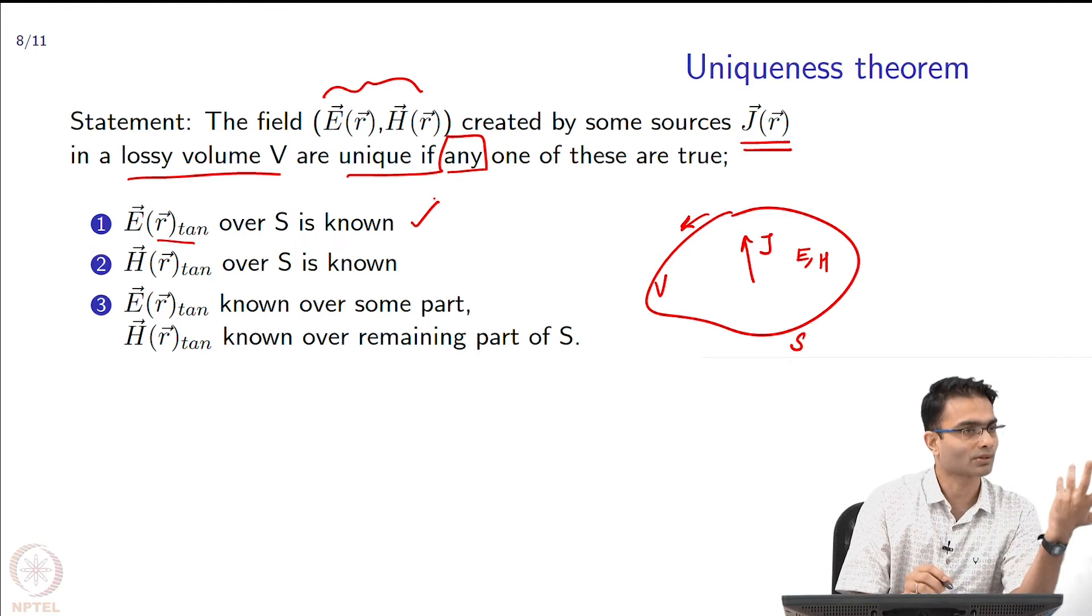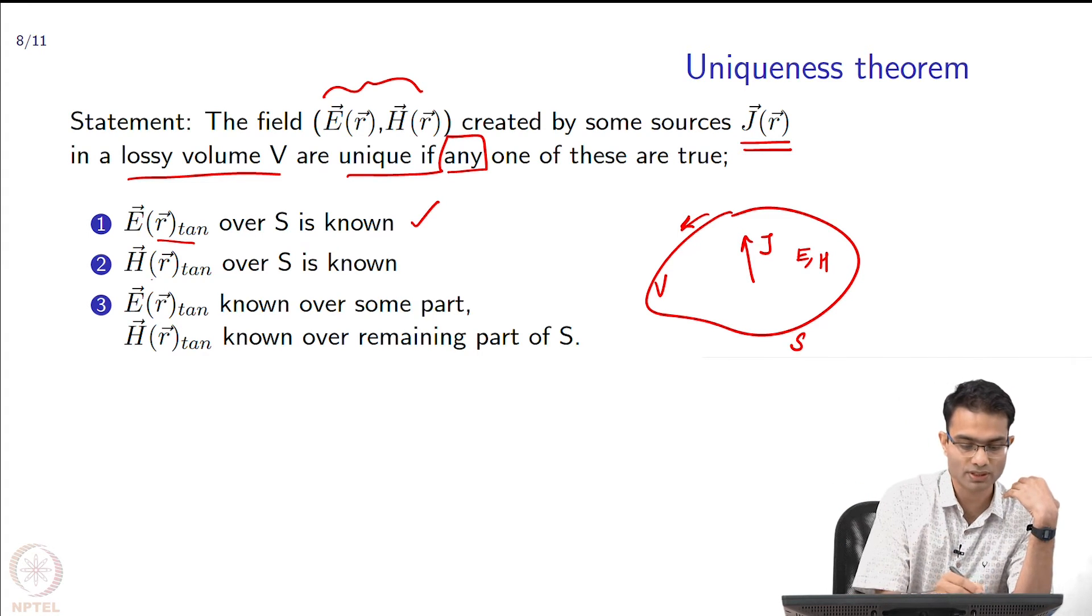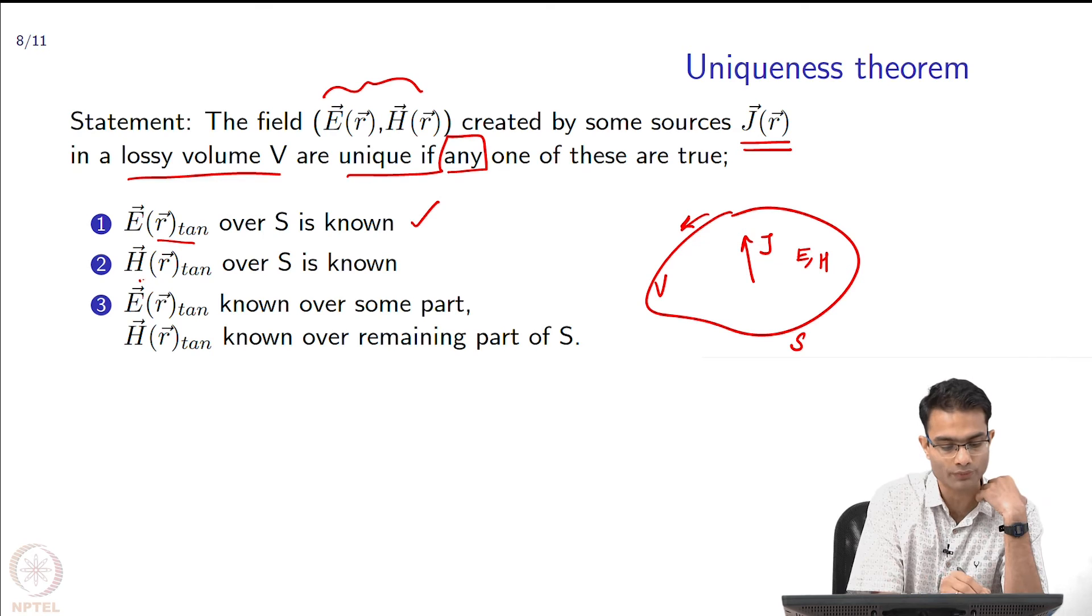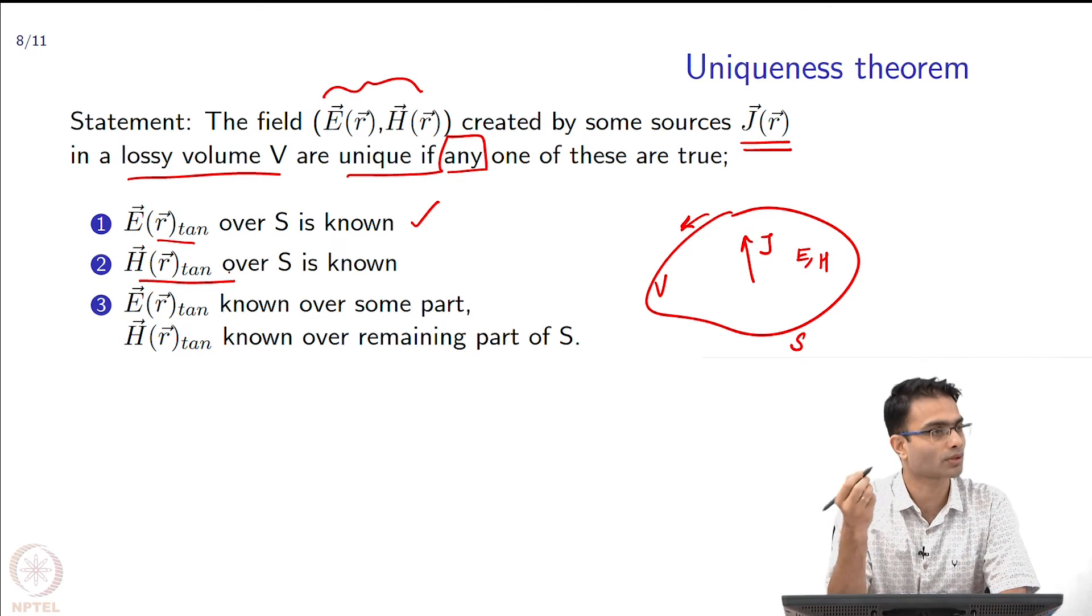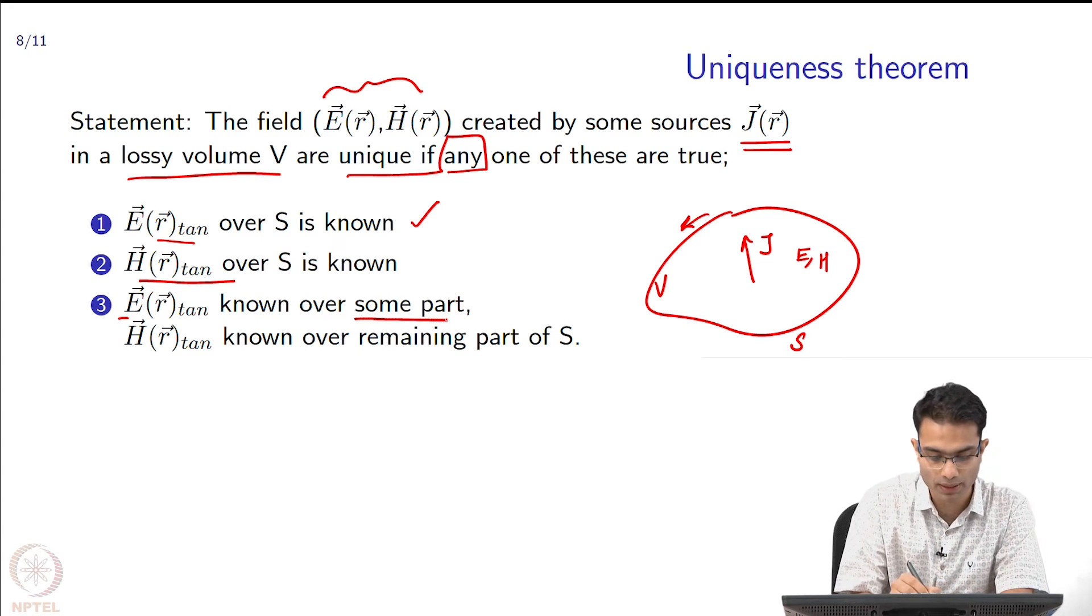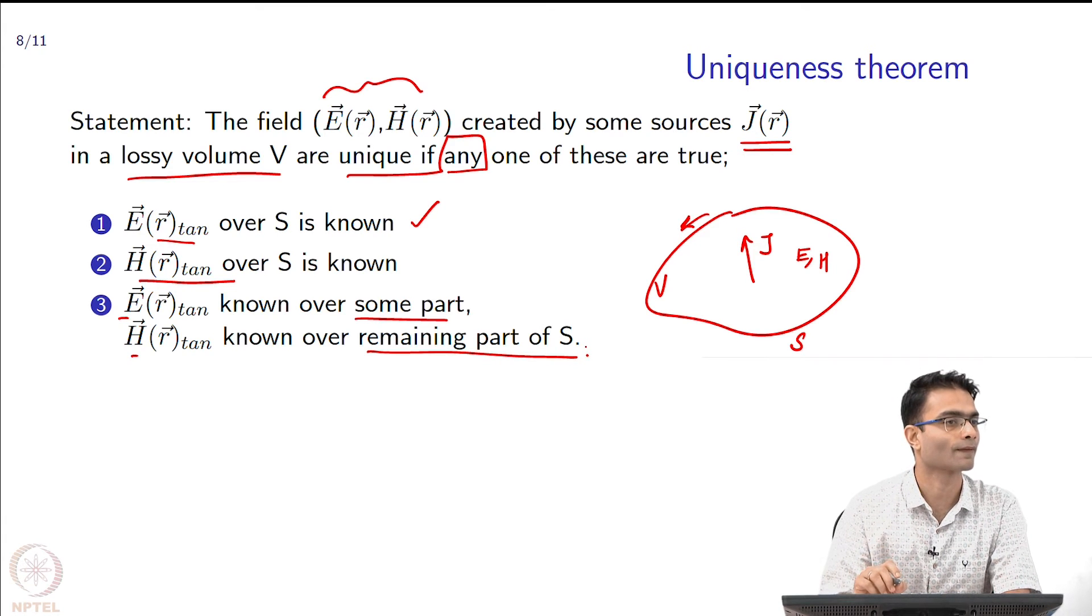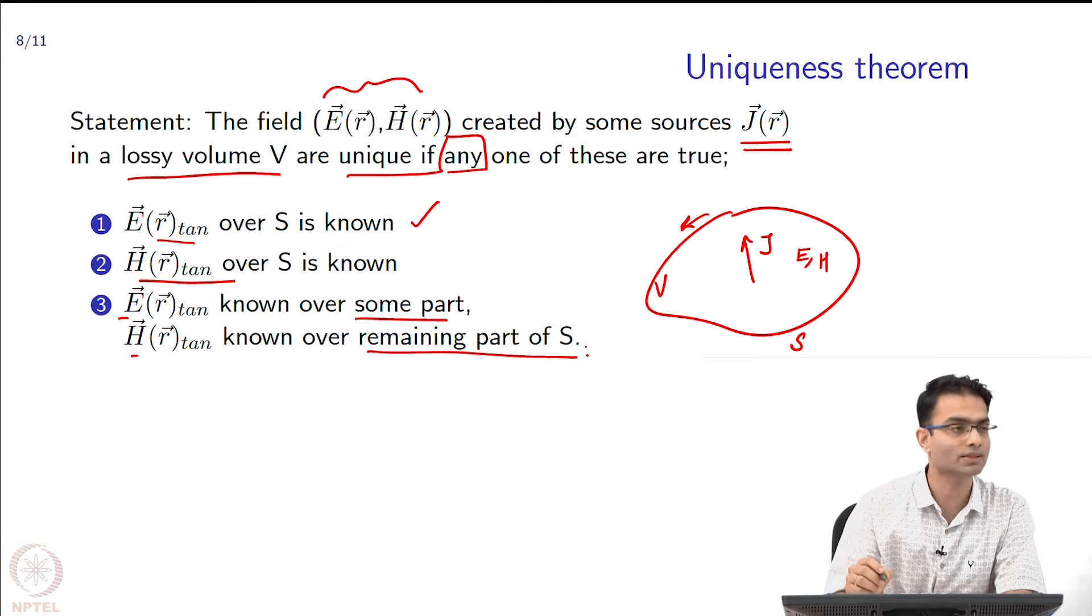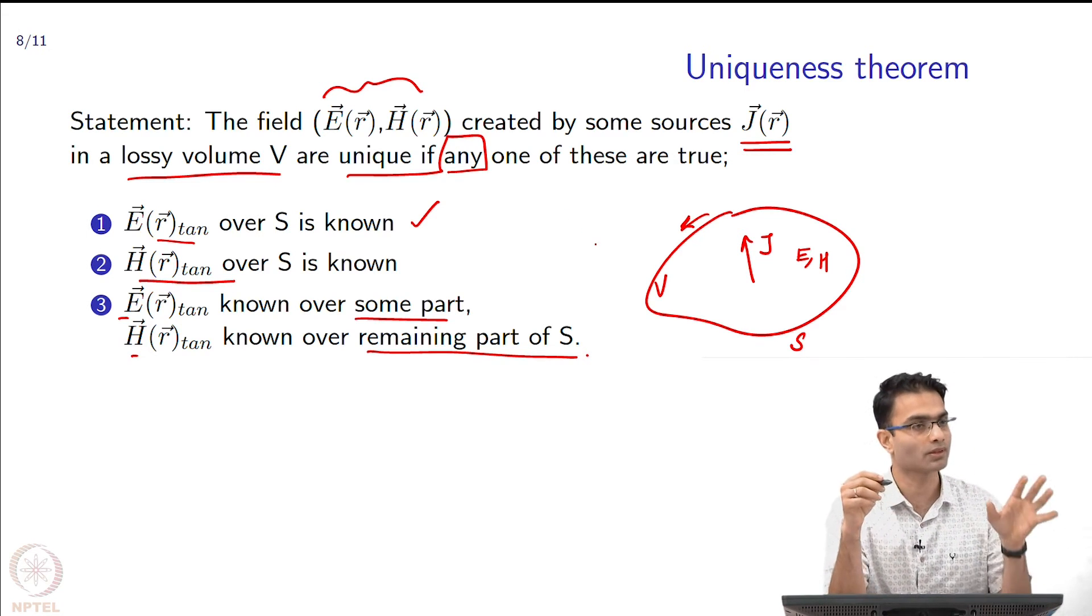The next condition is analogous because we have seen that there is a sort of symmetry between E and H fields. It says if you know H tan over all of S then the field is unique. And then there is of course the third option, a sort of linear combination that you give me E tangential over some part and H tangential over the remaining part. Under any of these conditions the field that you will get is unique.